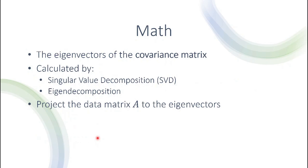To summarize the mathematical part: we want the eigenvectors of the covariance matrix. We calculate them using either SVD (singular value decomposition) or eigendecomposition — treating both as black boxes for this video. After we have these eigenvectors, we take the data matrix A and project the data onto them. This is the new representation of the data, now reduced because we only keep one, two, three, or however many eigenvectors we choose, which becomes the new number of features.